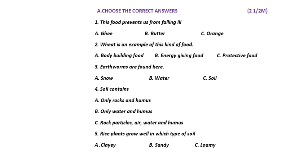First bit is choose the correct answers. First question: this food prevents us from falling ill — ghee, butter, or orange? The answer is orange. We have already discussed all these answers many times in the classroom, so I am just giving you all the answers so you can check. This food prevents us from falling ill — orange is the answer. Now moving to the second one.